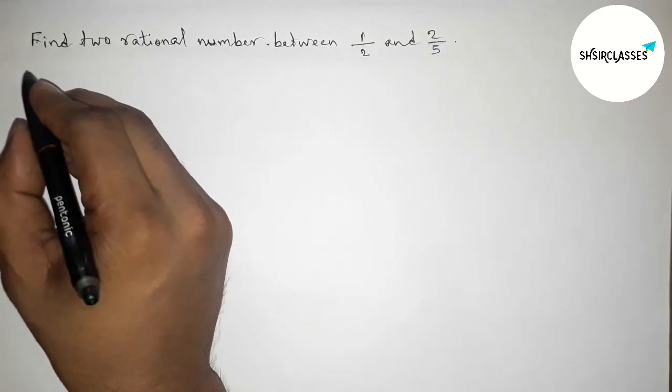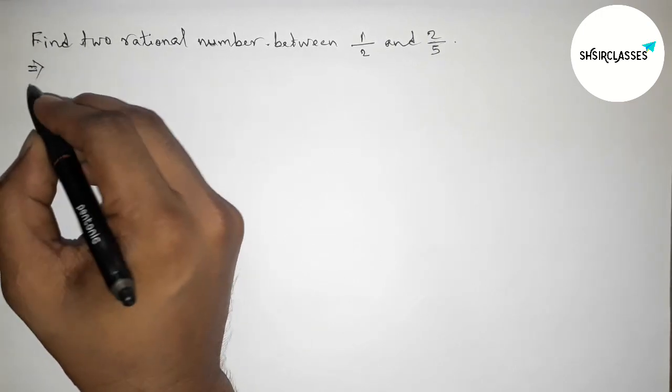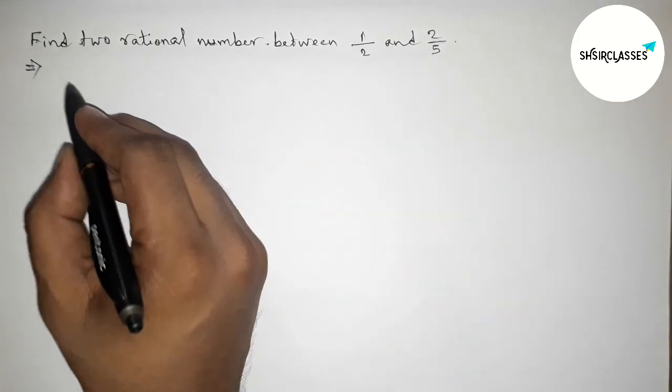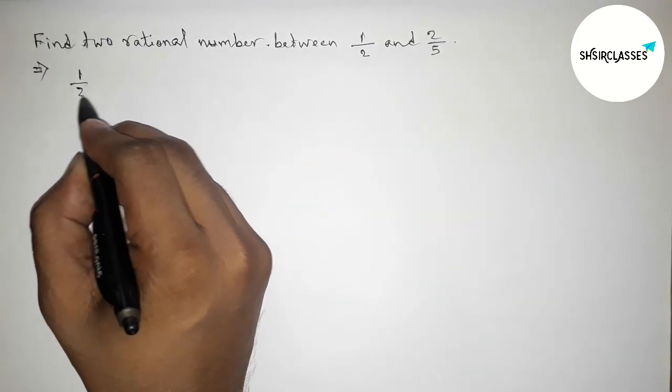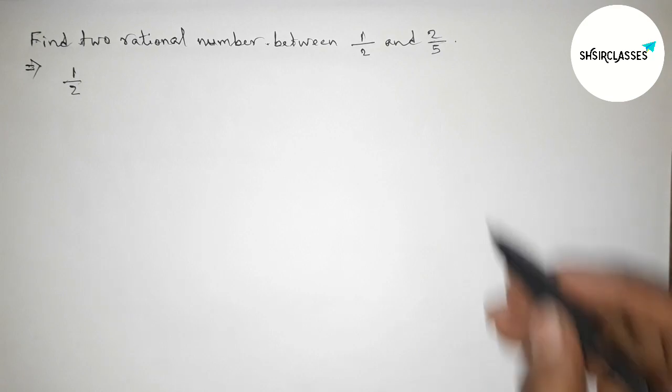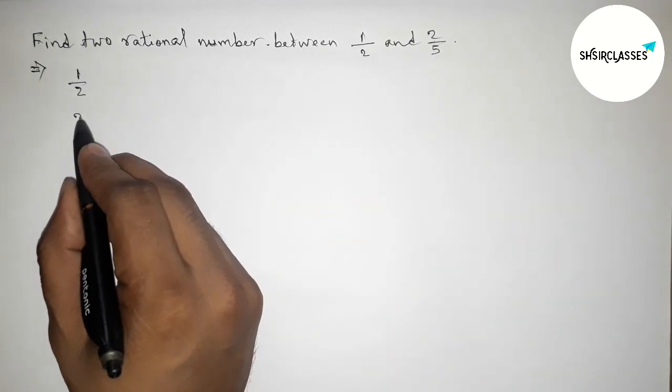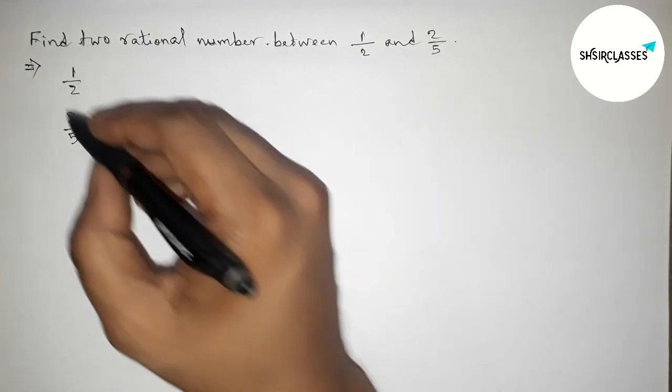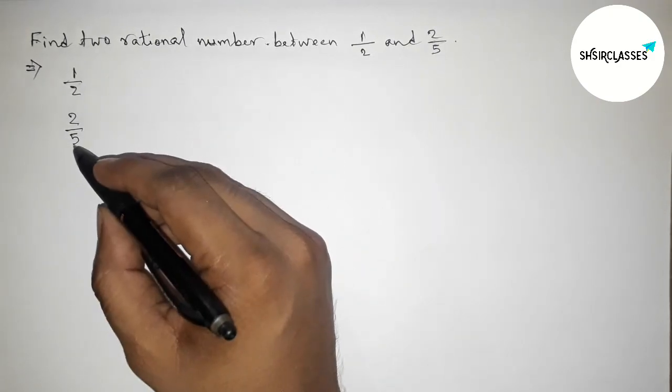First of all, let us solve this problem here. First, the given first rational number is 1 by 2 and second rational number is 2 by 5. Now here both the denominators are not same, so we have to make equal or same denominator.